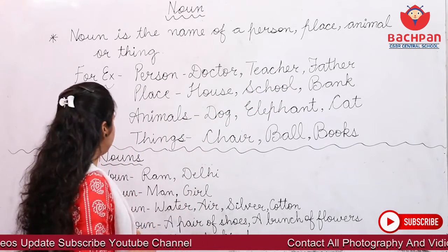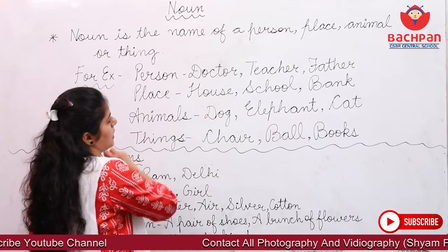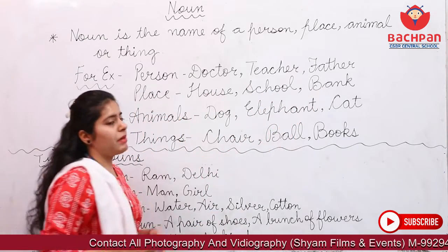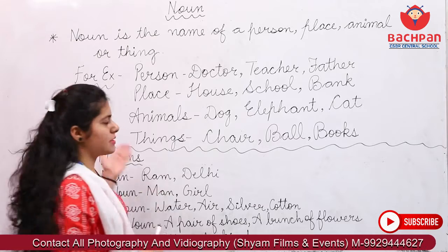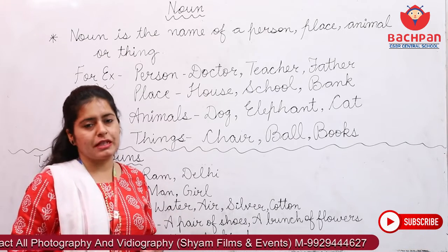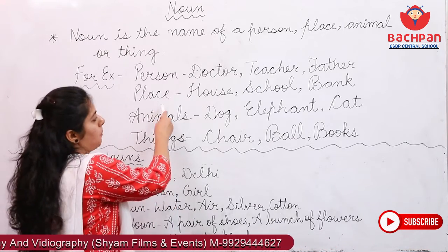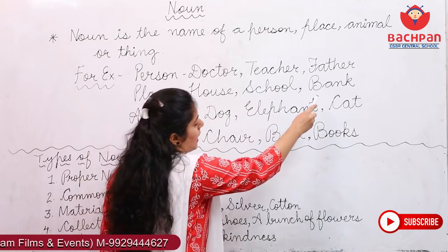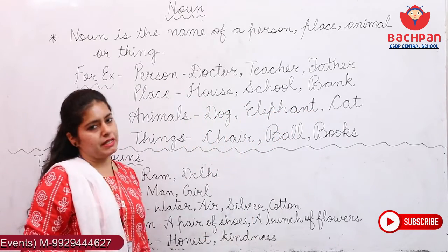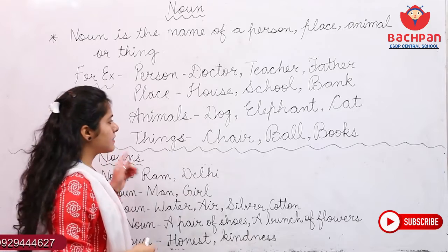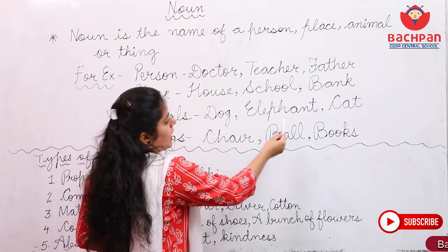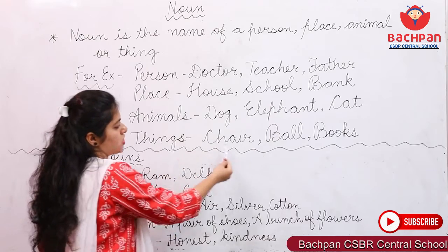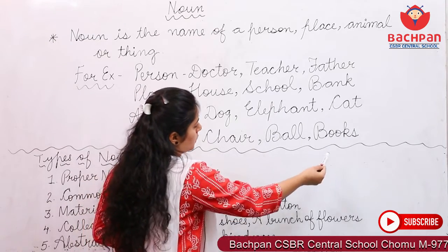For example, if we talk about a person: doctor, teacher, father — there are many examples which we denote as person. Next is place: house, school, bank, and there are many places. Next is animals: dog, elephant, cat. And things: chair, ball, books, etc.